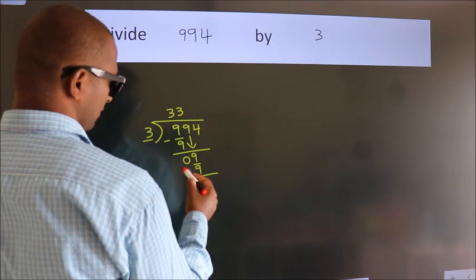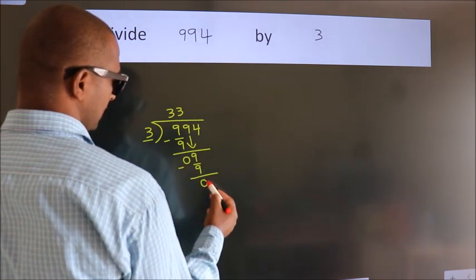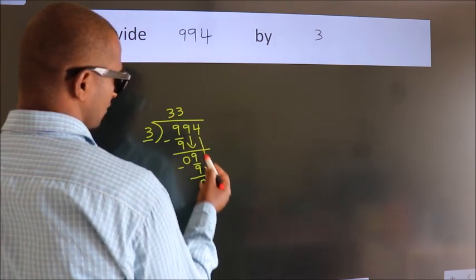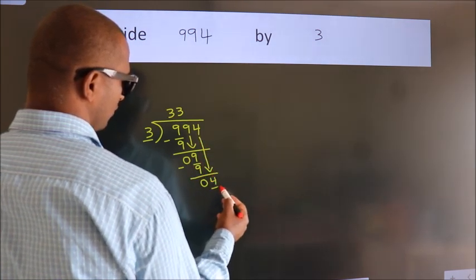Now, we subtract. We get 0. After this, bring down the beside number. So 4 down. So 4.